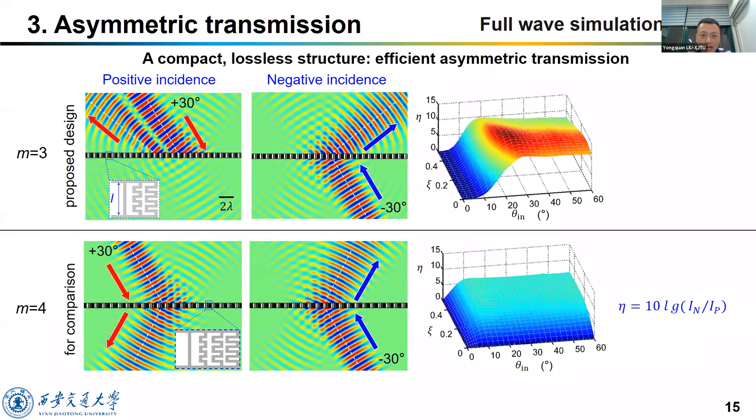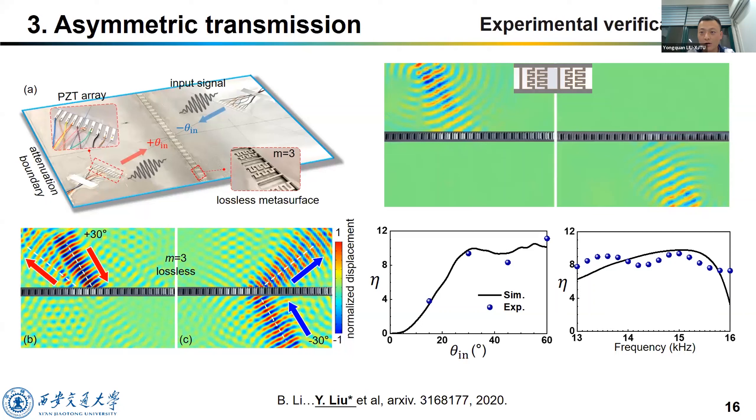Besides that, we have checked the effects of loss, the incident angle and the working frequencies. We found that our metasurface is very robust to the incident angle, the input frequency, and the loss. We then did the experimental verification so that our metasurface can work very well. Here is the experimental result. And it works in a wide range of incident angle and a wide range of frequency.